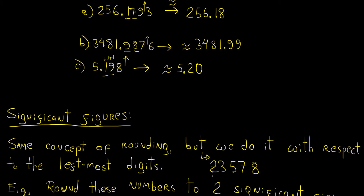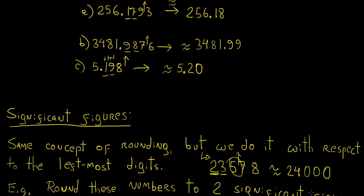If we want to round 23578 to two significant figures, we look at the two leftmost digits and then check the number right next to them. Because we use the same technique as for decimals, we only look at the digit immediately to the right. The 5 is closer to 10 than to 0, so we round up, giving us 24,000.